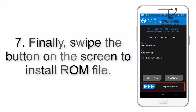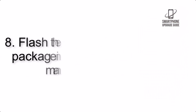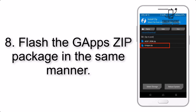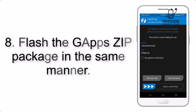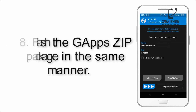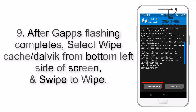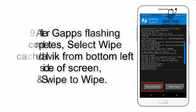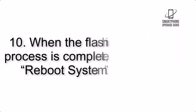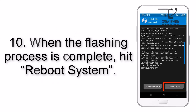Step 7: Swipe the button on the screen to install the ROM file. Step 8: Flash the GApps zip package in the same manner. Step 9: After GApps flashing completes, select Wipe Cache and Dalvik from the bottom left side of the screen and swipe to wipe.